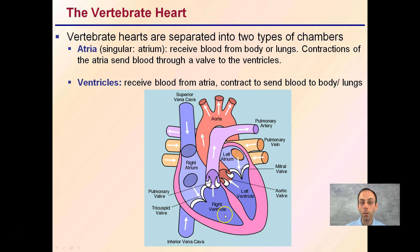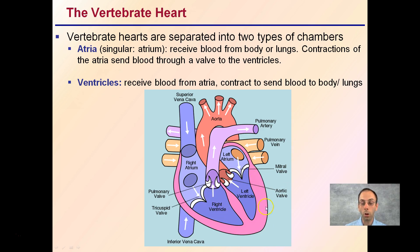This is because the ventricles have to send blood all the way to the lungs, or even a greater distance to the rest of the body. That's why we see this larger muscle. The atrium is simply collecting the blood and pumping it to the ventricles.